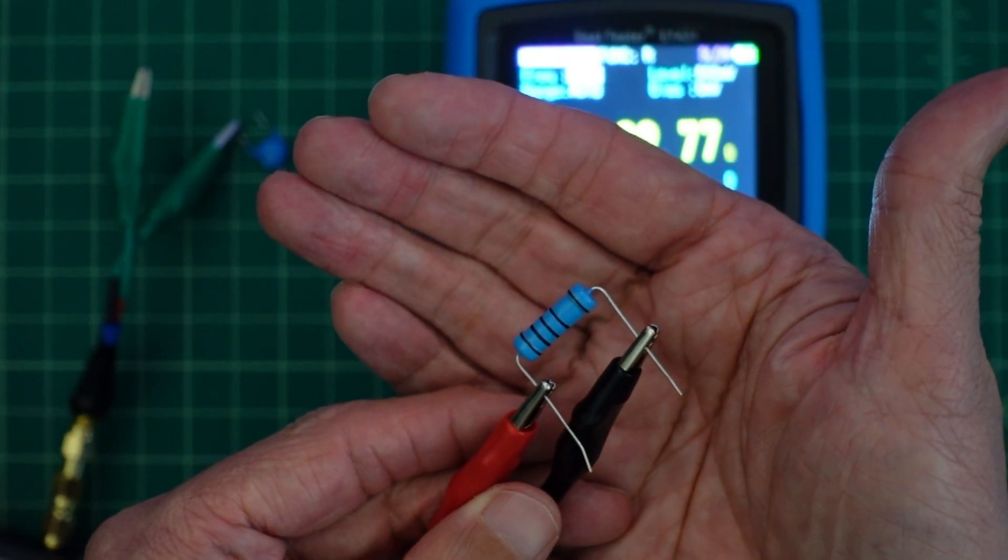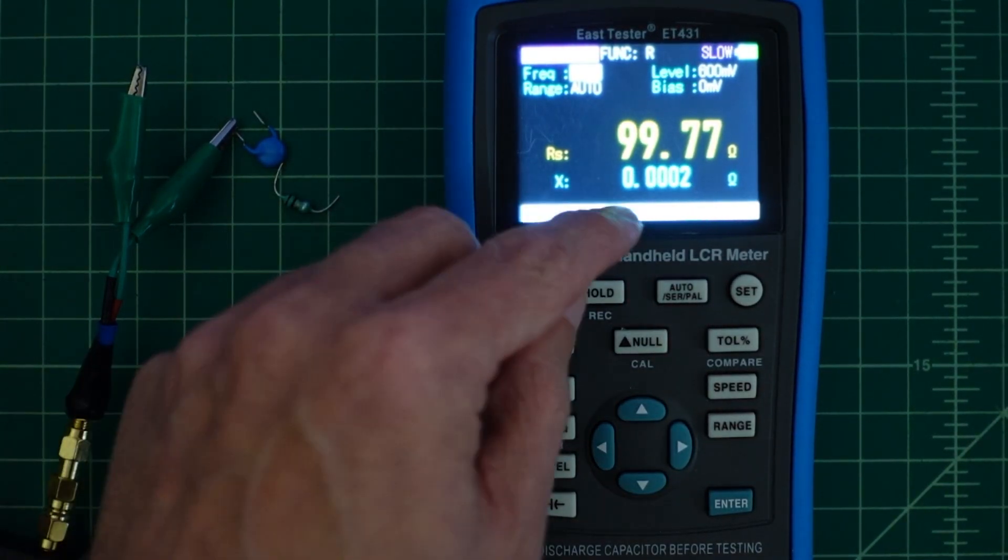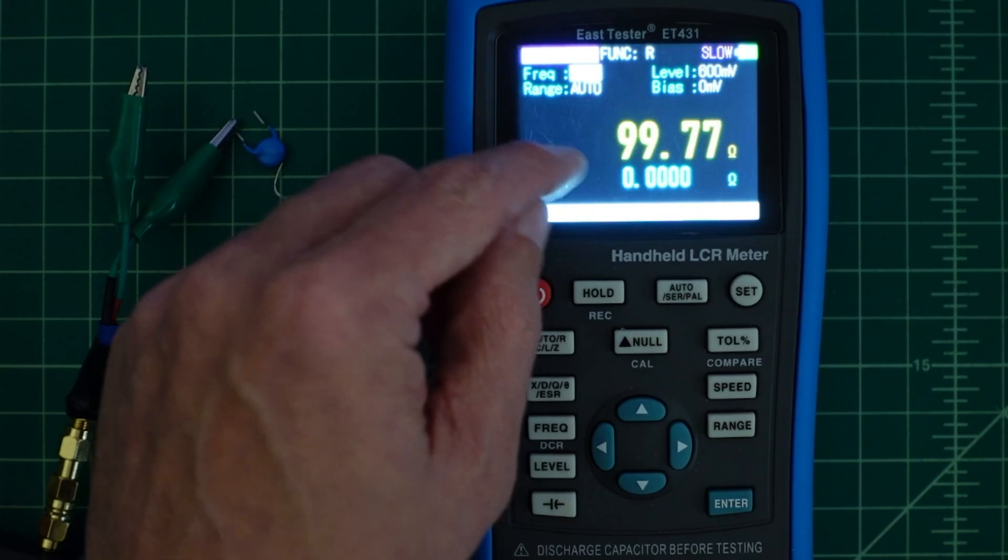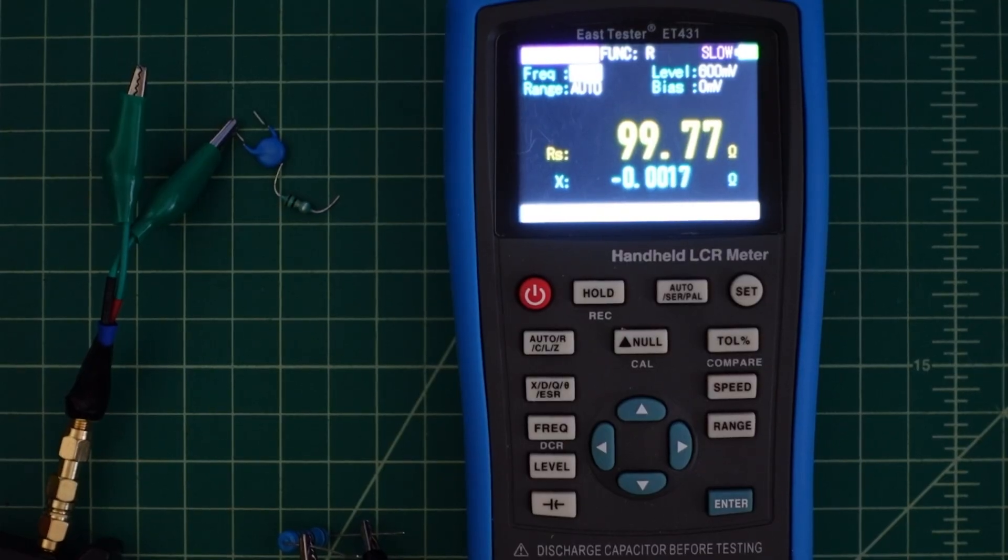All right, so now you can see that we have a resistor hooked up to our east tester and this resistor is reading 99.77 ohms, which is what we expect because it's a 100 ohm resistor. Let's connect it to the nano VNA.